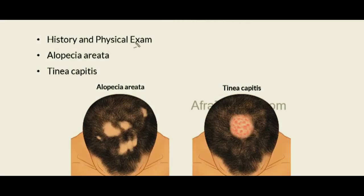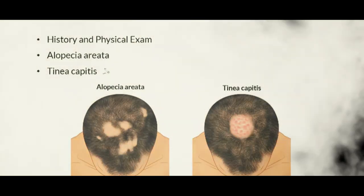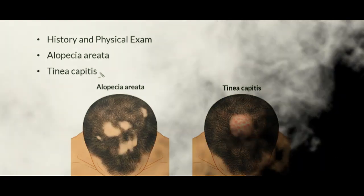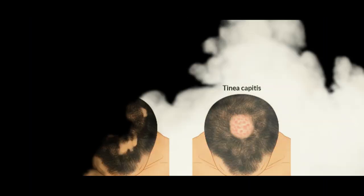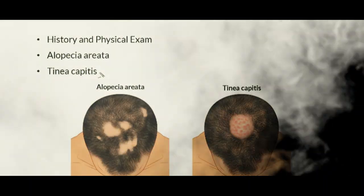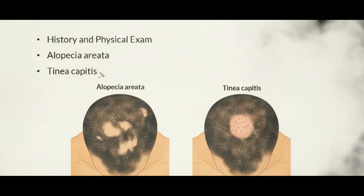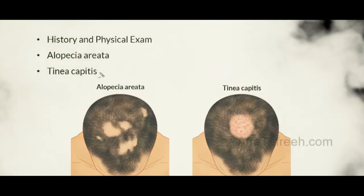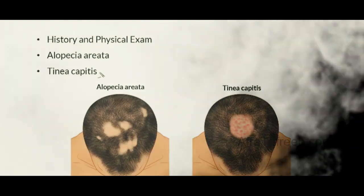We will cover the elements of the history and physical exam relevant to patients with alopecia. After this introduction, we will do a deep dive into two very high-yield conditions for board examinations: alopecia areata and tinea capitis. By the end of this video, you will be able to distinguish these two conditions in terms of their presentations, and you will have mastered the pathophysiology, workup, and management of each.